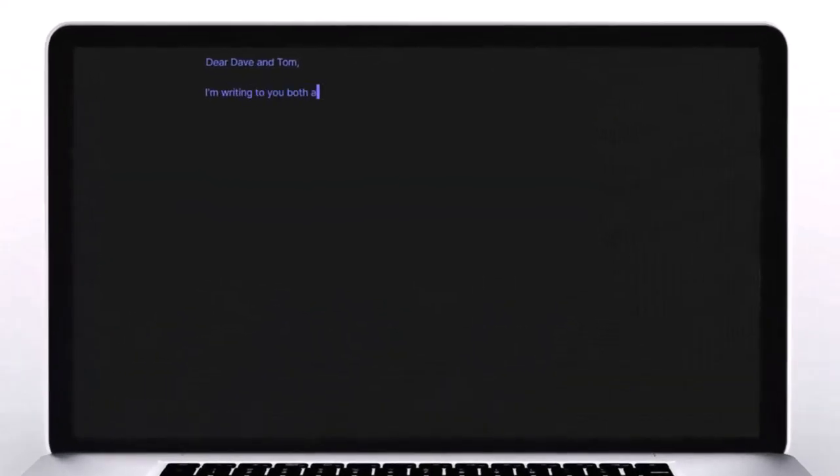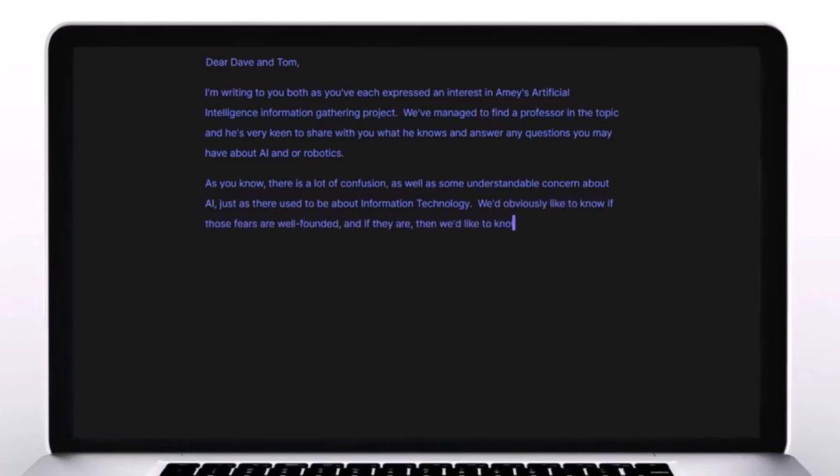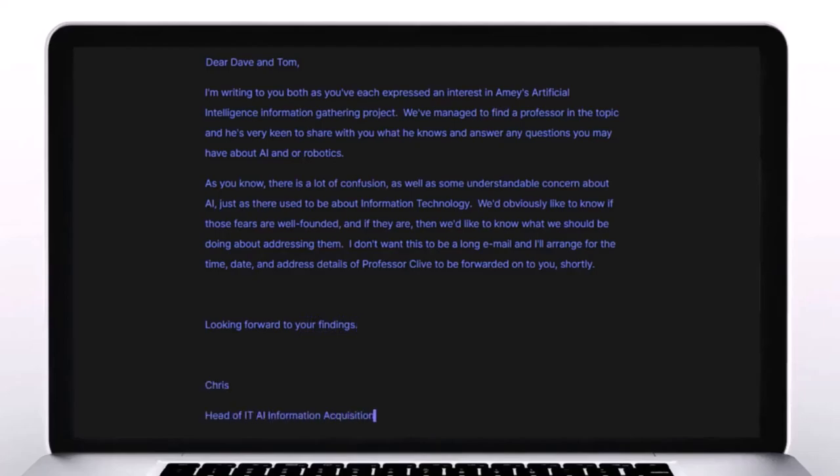Dear Dave and Tom, I'm writing to you both as you've each expressed an interest in Amy's Artificial Intelligence information gathering project. We've managed to find a professor in the topic and he's very keen to share with you what he knows and answer any questions you may have about AI and robotics. As you know, there is a lot of confusion as well as some understandable concern about AI, just as there used to be about information technology. We'd obviously like to know if those fears are well founded and if they are, then we'd like to know what we should be doing about addressing them. I'll arrange for the time, date and address details of Professor Clive to be forwarded on to you shortly. Looking forward to your findings. Chris, Head of IT's AI Information Acquisition.